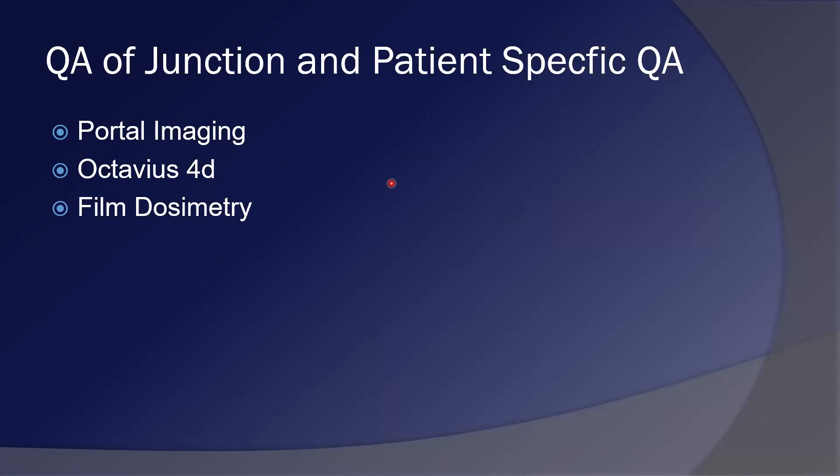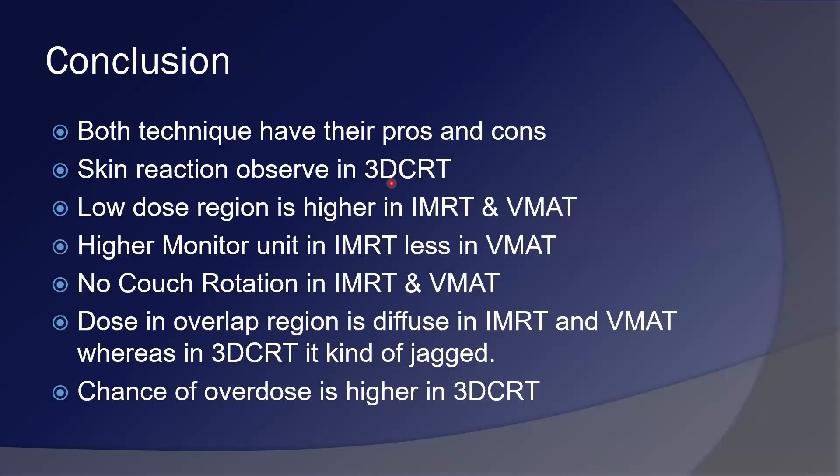For QA of the junction: in 3D CRT, junction QA is important and can be done with film dosimetry. For IMRT and VMAT, patient-specific QA is important and can be done with portal imaging. The Octavius 4D system allows coverage of large fields, and film dosimetry can be used with large film formats.